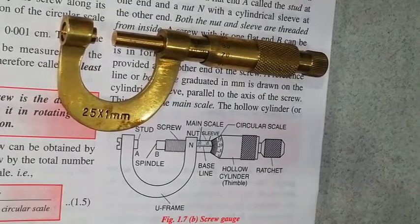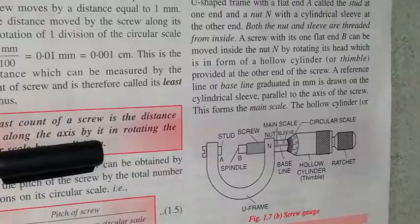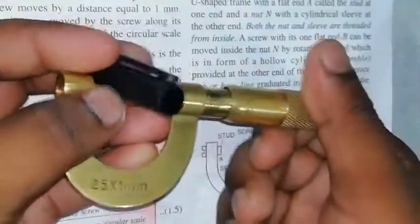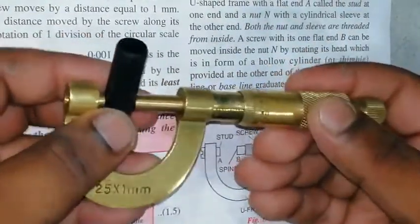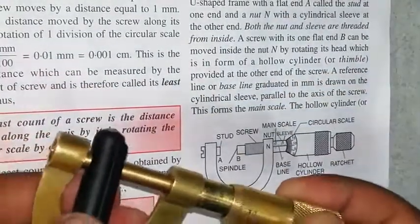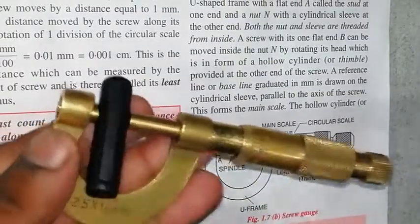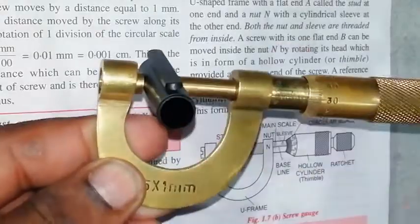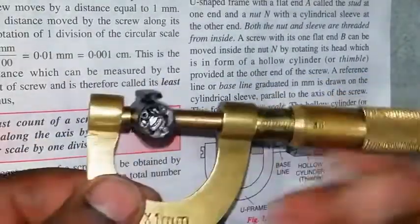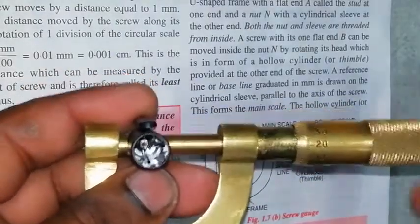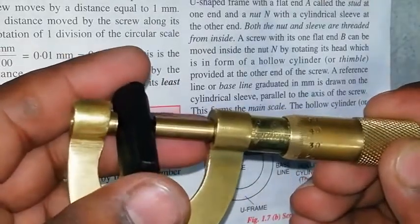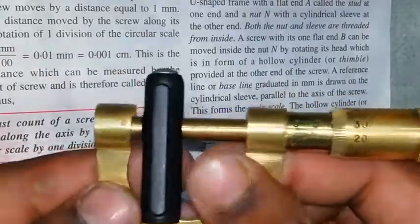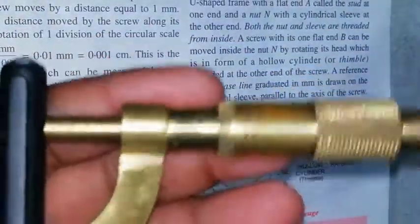Now let's measure the external diameter of a cap. We place the cap between Point A (stud) and Point B (spindle). It is fixed — not too tightly, because the cap is not purely metallic and over-tightening would compress it. We place it so it is not being compressed, then take the measurement.